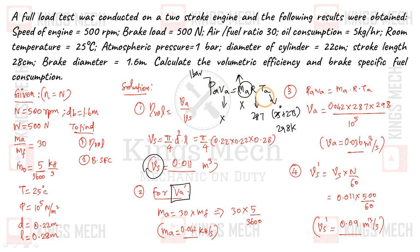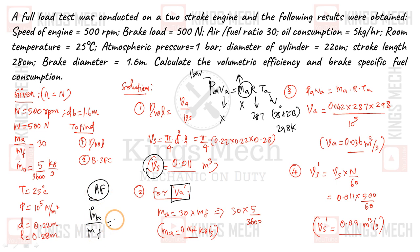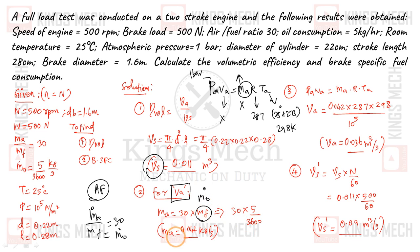We have the value of air-fuel ratio. Air-fuel ratio MA divided by MF equals 30. So MA equals 30 multiplied by MF. Substituting the value of MF, I get MA equal to 0.042 kg/s.